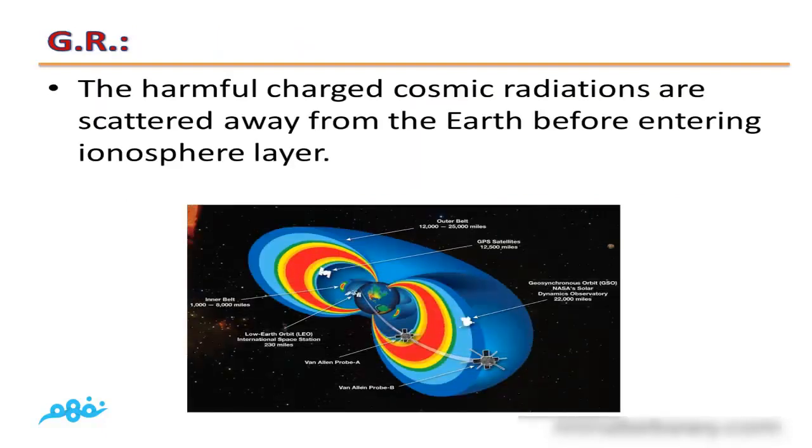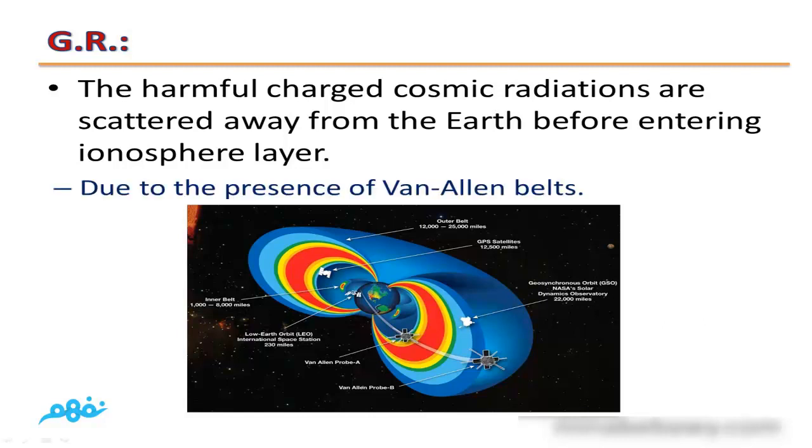Give reason for: The harmful charged cosmic radiations are scattered away from the earth before entering ionosphere. This is due to the presence of Van Allen belts.